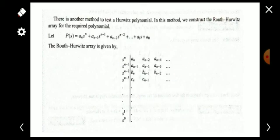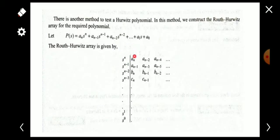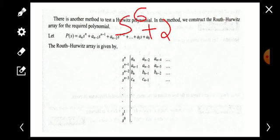For constructing the Routh array, suppose our polynomial is P(s), and the coefficients are a_n, a_(n-1), a_(n-2), up to a_1 and a_0. We will construct the Routh array starting with the highest order — for example, if our polynomial is s^6 + 2s^5 + s^4 + s^3 + ..., we start with s^6.